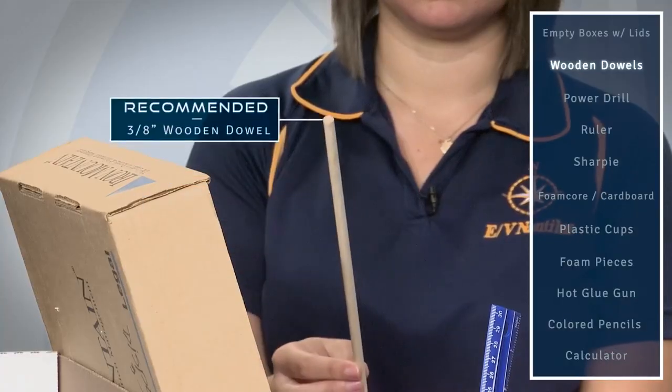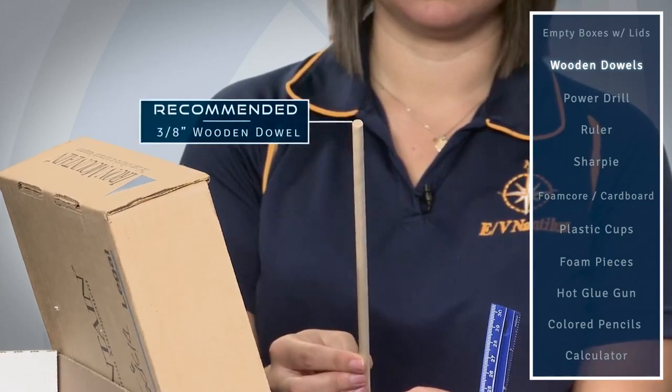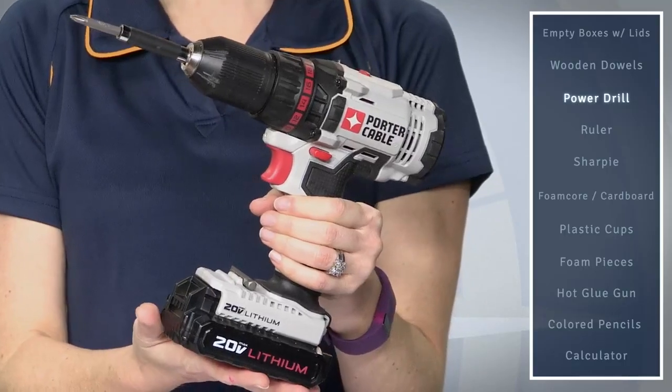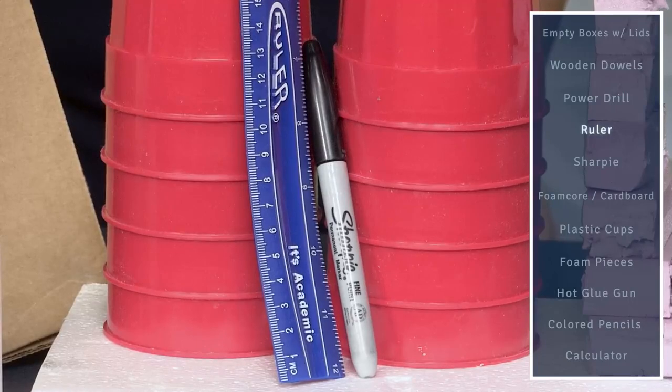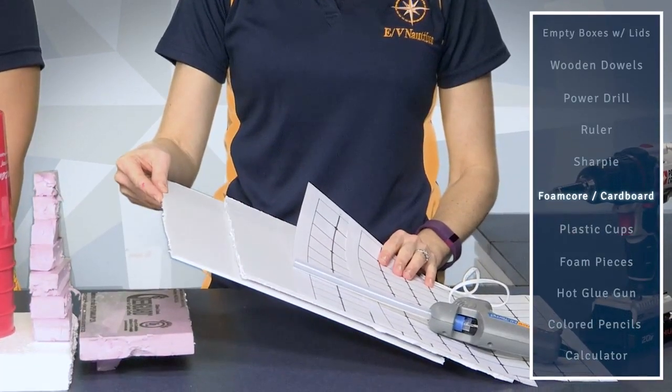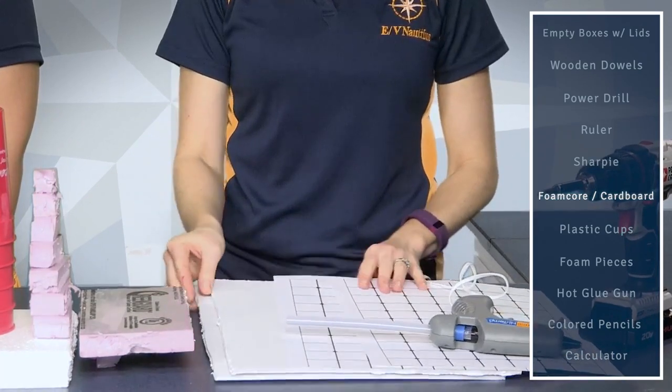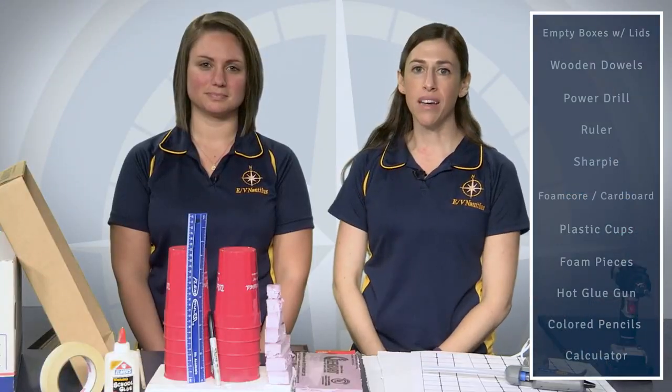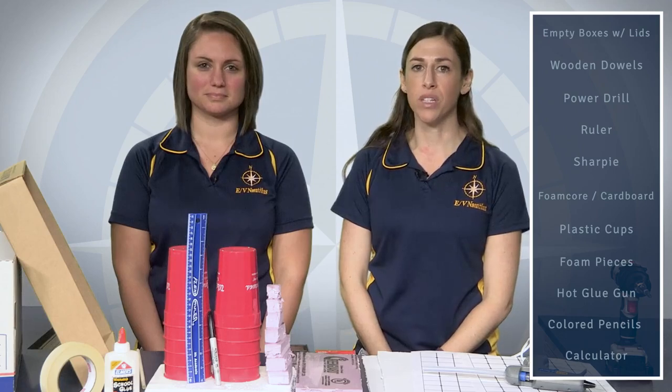Wooden dowels. We recommend using three-eighths of an inch dowel. A power drill. Ruler. A sharpie. An extra foam core or cardboard equal in size to the box top. Inside the boxes, you can use any combination of materials to build a contoured seafloor.